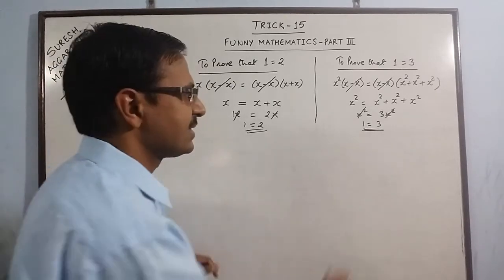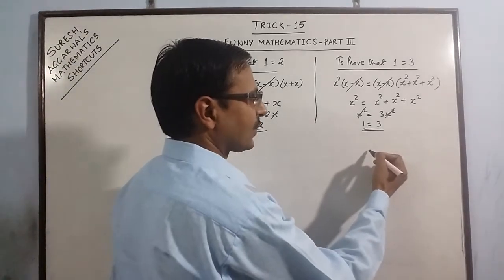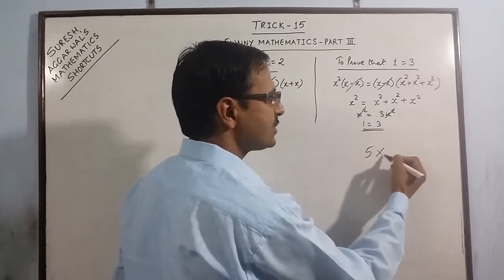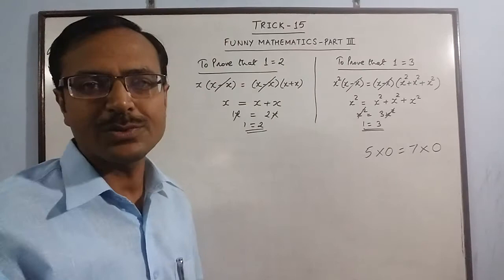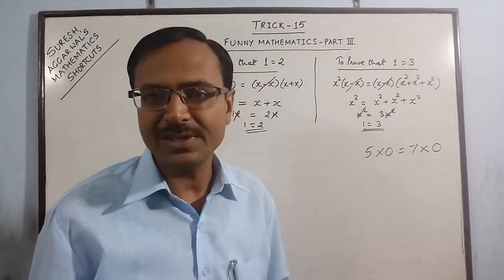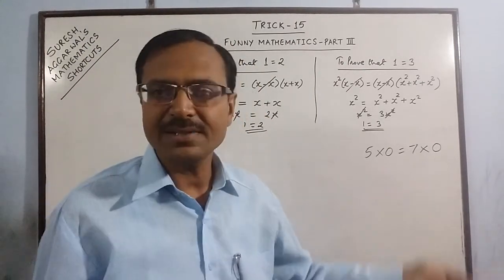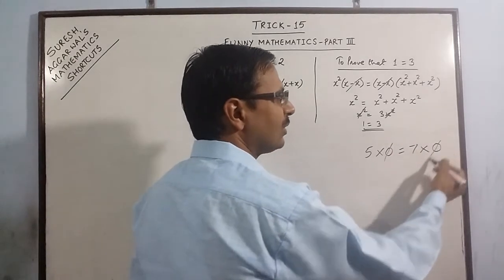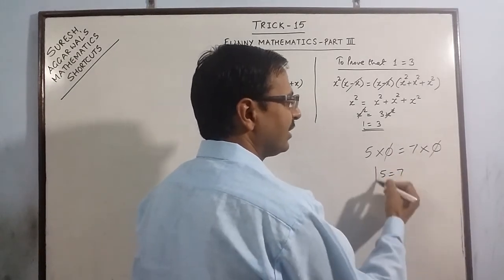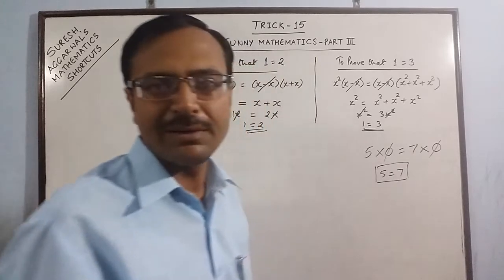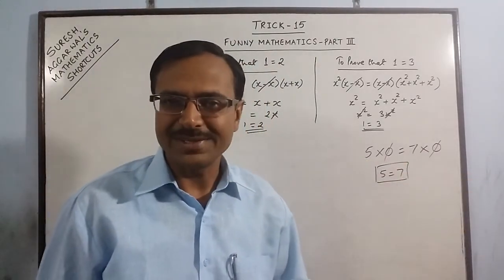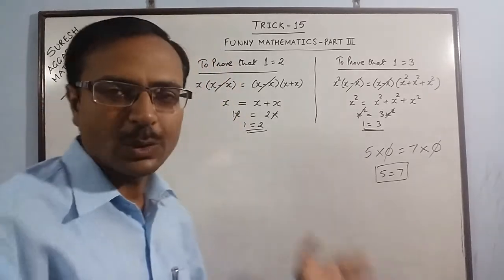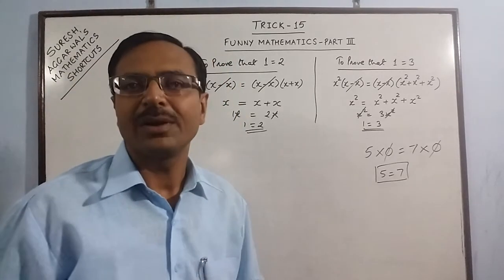So these type of results obviously will arise if you cancel out 0 as a factor on both sides. Another example of this is suppose we have 5 into 0 equal to 7 into 0. Now obviously 5 into 0 is 0 and 7 into 0 is again 0, so LHS and RHS are equal. But if we cancel out 0, 5 equal to 7, it is a crazy result and it is always crazy to cut out 0s on both sides. So this is what I was looking for in trick number 14.